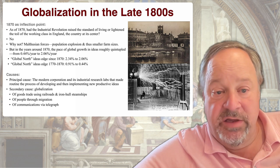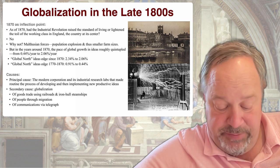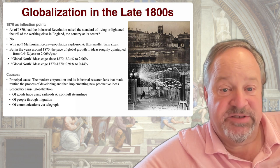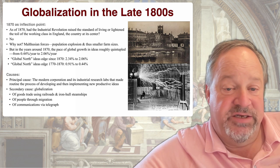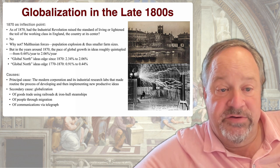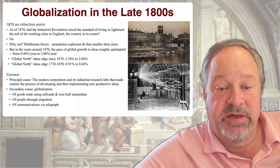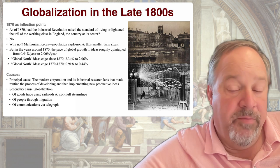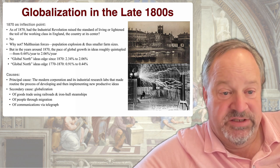Population explosion from a little gain in income per capita relative to previous Malthusian stagnation, and thus smaller farm sizes, offset what technological improvements there had been before 1870, at least as far as the standard of living of the working class was concerned. But in the years around 1870, the pace of global growth in ideas discovered, developed, and deployed nearly quintupled, and has continued to grow faster in the global north than elsewhere since 1870. The principal cause was the modern corporation and its industrial research labs, which routinized and rationalized the processes of discovering, developing, and deploying new productive ideas.